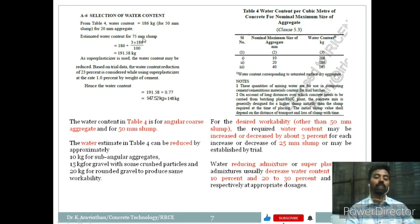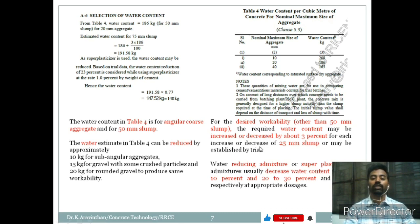Since the table is given for 50mm slump and we require 75mm slump, we have to add 3% of water. For every 25mm increase in slump, water content is increased or decreased by about 3%. So, 3% of 186 = 5.58 kg, giving a total of 191.58 kg/m³. If you are not using any superplasticizer, you can take this value and proceed. If you are using superplasticizer, you can reduce this water content.